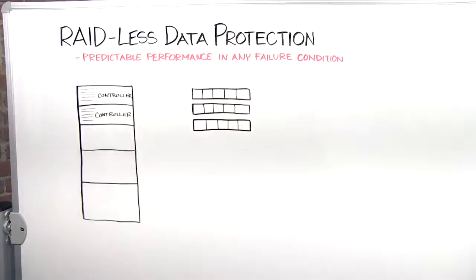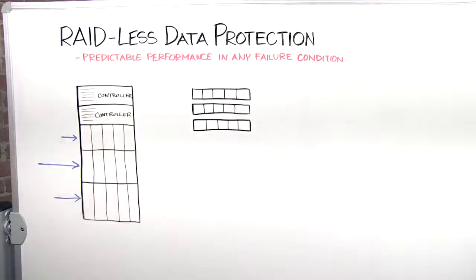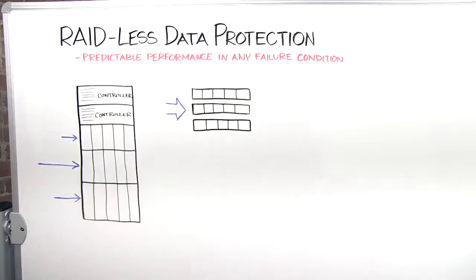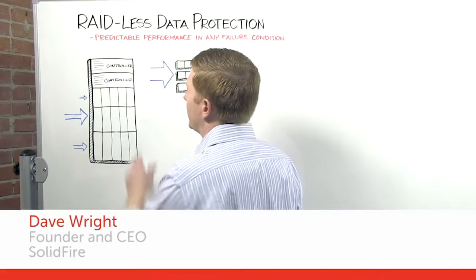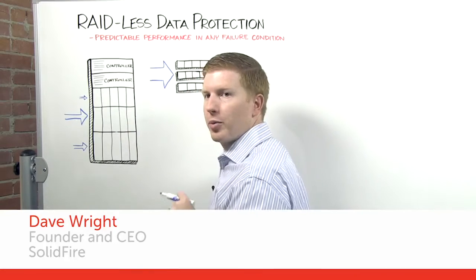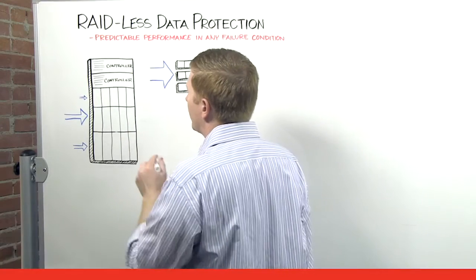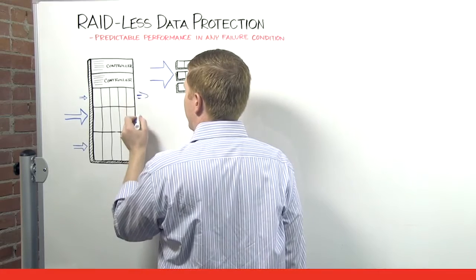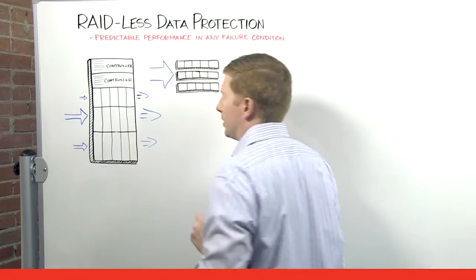The third requirement for guaranteed quality of service is a data protection architecture that doesn't use RAID. Let me show you what I mean. A traditional RAID-based storage design uses a set of controllers and then disk shelves that are protected with RAID. During normal operation, the RAID provides significant bandwidth for all the requests coming into the system.